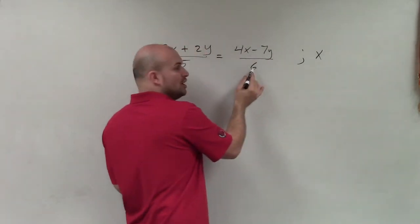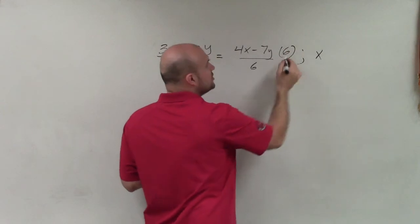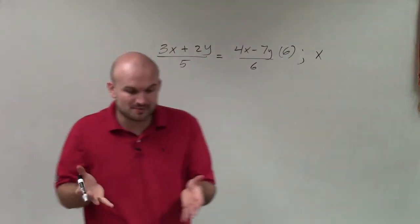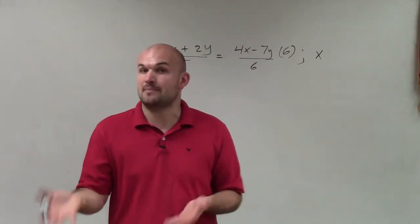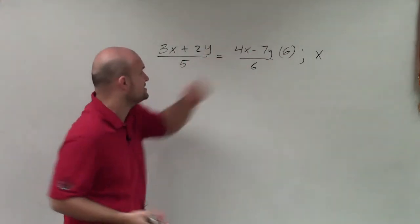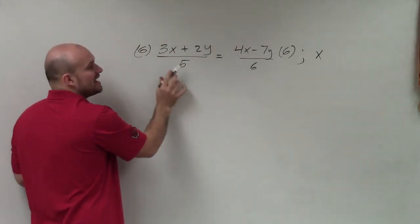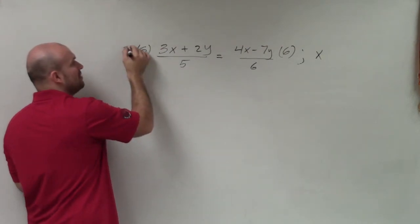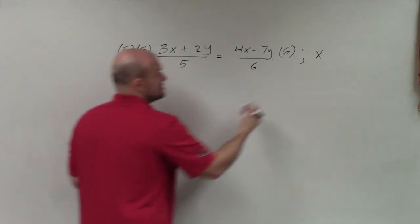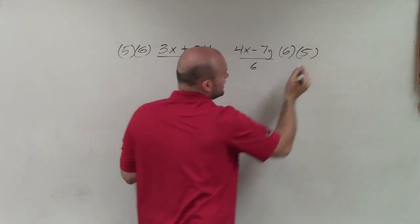If I want to undo divided by 6, I'm going to have to multiply by 6. But remember, since we have an equation, we have to apply the property of equality. If I'm going to multiply 6 on the right side, I have to multiply by 6 on the left side. And here, this x is being divided by 5, so I need to multiply by 5 to undo that division. But then I need to multiply by 5 over here.